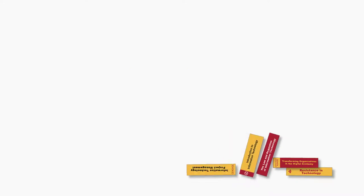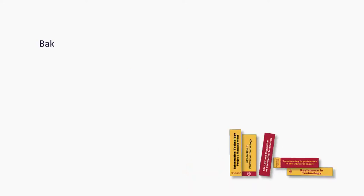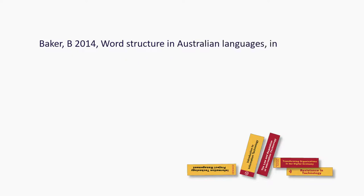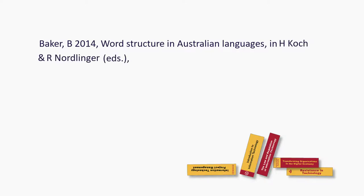So how do we create a reference for a chapter in an edited book? We need the author and initials, the year 2014, the title of the chapter — 'Word Structure in Australian Languages' — then the editor and the title of the book, 'The Languages and Linguistics of Australia'.